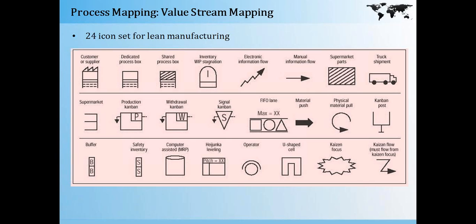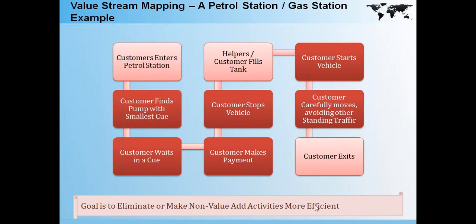For our simplicity, in the examples we are going to use, we will use normal boxes for depicting a value stream map. The first example is a value stream map of a petrol station, which is a process flow typically followed in India. First, the customer enters the petrol station, then finds the pump with the smallest queue, then waits in the queue. The customer makes payment for the fuel, stops his vehicle, the attendant comes and fills the tank, after which the customer starts the vehicle, carefully moves avoiding other standing traffic, and finally exits.